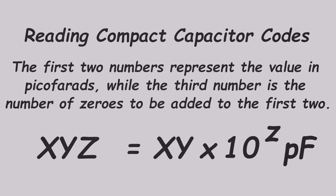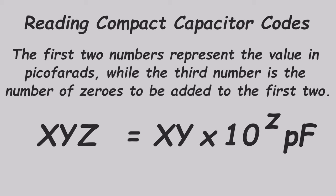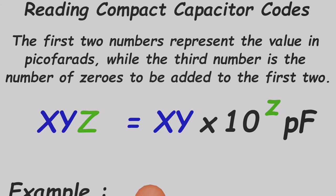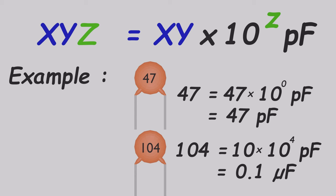Some tiny ceramic capacitors have a two- to three-digit code printed on them. The first two numbers describe the value of the capacitor, and the third number is the number of zeros in the multiplier. When the first two numbers are multiplied with the multiplier, the resulting value is the capacitance in picofarads. If there are only two numbers, it means there is no multiplier, and you can read the value of the first two numbers directly in picofarads.